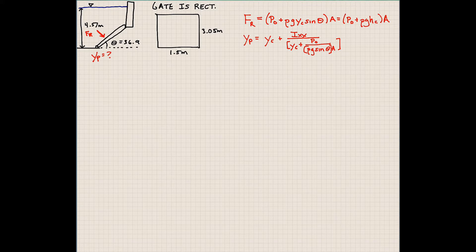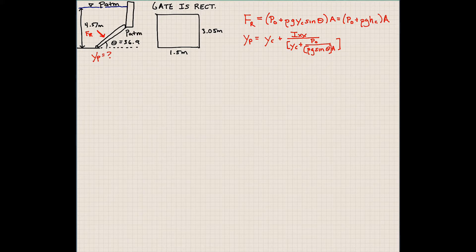For that, we're going to use our equations which we've already used previously. We'll go ahead and assume that in this gate we have atmospheric pressure acting on top of the gate, and we have atmospheric pressure acting also on the other side of this gate — so maybe it's a dam or something. That will help us to simplify this problem.